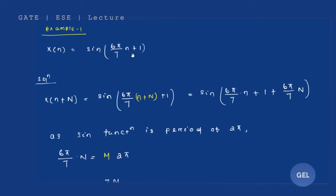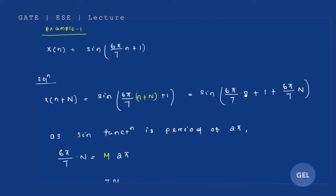Let's jump into examples. The first signal is x(n) = sin(6π/7 · (n + 1)). I'm going to substitute n with n + N, so we get sin(6π/7 · (n + N + 1)). If you expand this, you get the original expression plus an extra term — 6π/7 · N. For x(n + N) to equal x(n), that extra part must be a multiple of 2πm, where m is an integer.